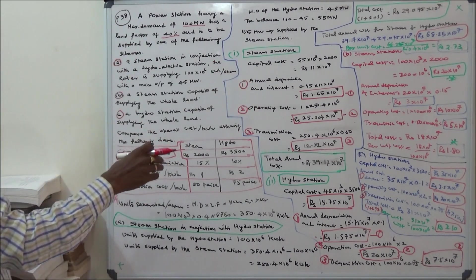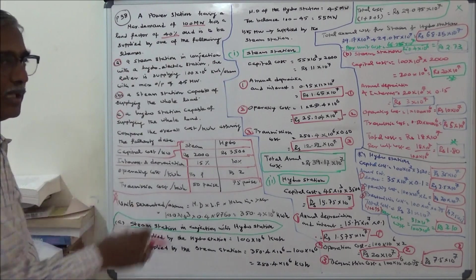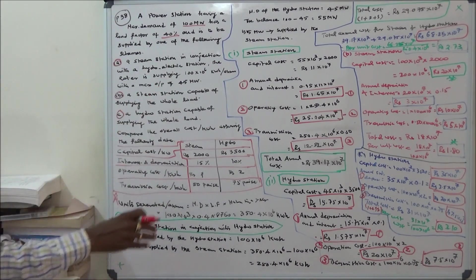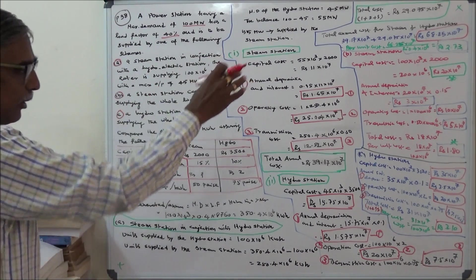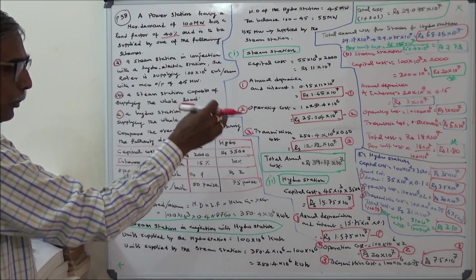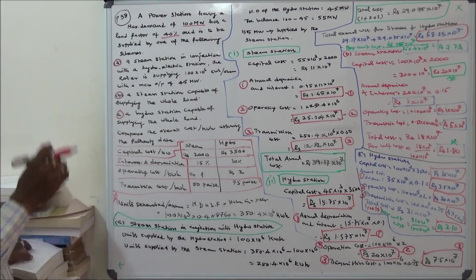Total cost for scheme B is rupees 18 crores. Per unit cost is 18 crores divided by 350.4 into 10 power 6 equals 1 rupee 80 paise. That is the per unit cost for the steam station supplying the whole load.